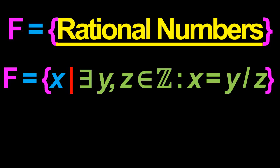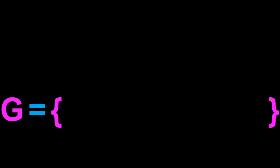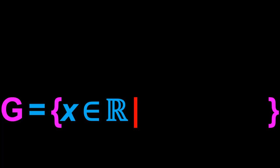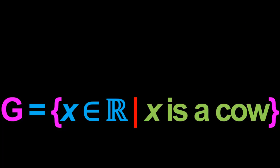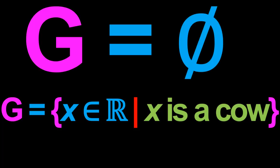Second last example before we call it a day. Suppose the set G consists of all the real numbers which satisfy the property that x is a cow. It turns out that in this case, the set G is just the empty set — simply because there is no real number x which satisfies the property that x is a cow. There is no real number which is also a cow, so G must be empty.